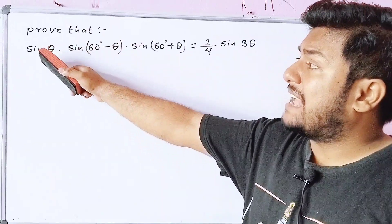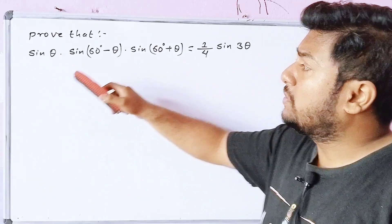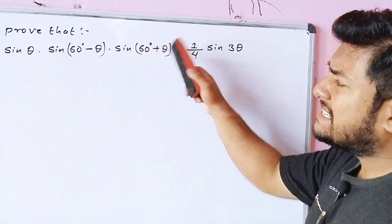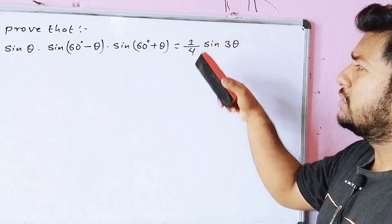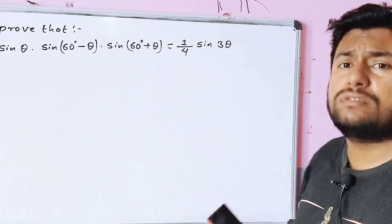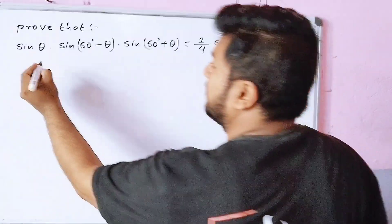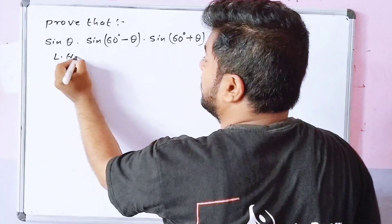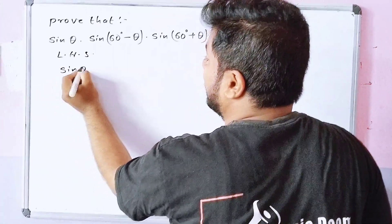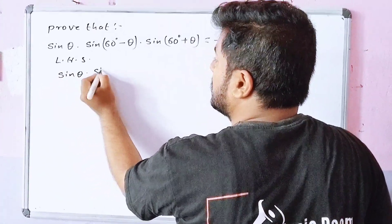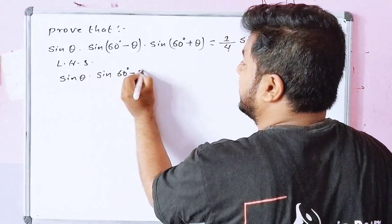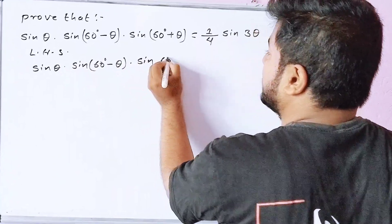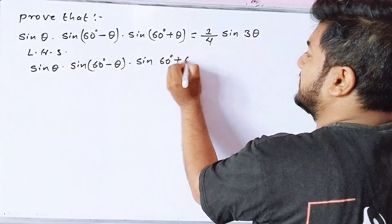Prove that sin theta into sin(60 degrees minus theta) into sin(60 degrees plus theta) is equal to one-fourth sin 3 theta. The question is sin theta into sin(60 degrees minus theta) into sin(60 degrees plus theta).